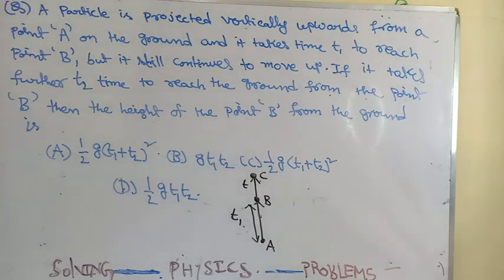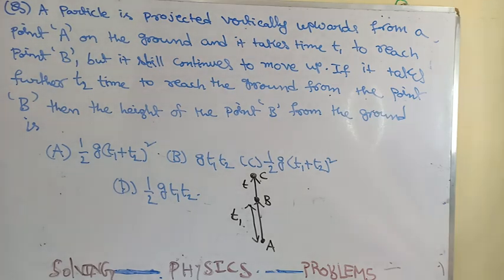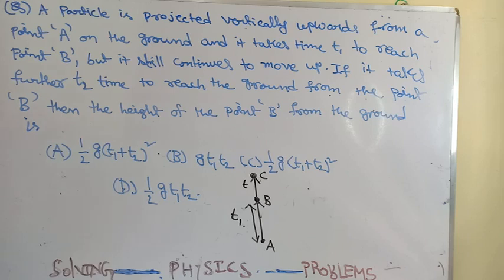Welcome to Smart Jumps. This is our next question: a particle is projected vertically upwards from a point A on the ground. It takes time t1 to reach a point B but still continues to move up. If it takes a further t2 time to reach the ground from point B, then the height of point B from the ground is — option A: half g into (t1 plus t2) whole square; option B: g·t1·t2.